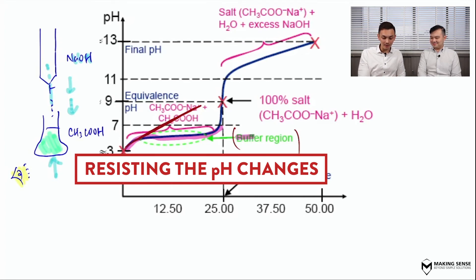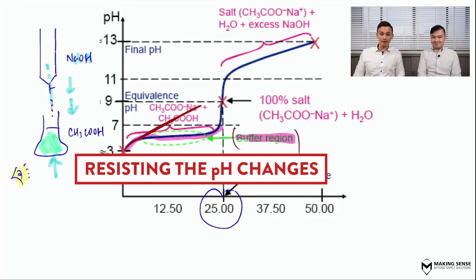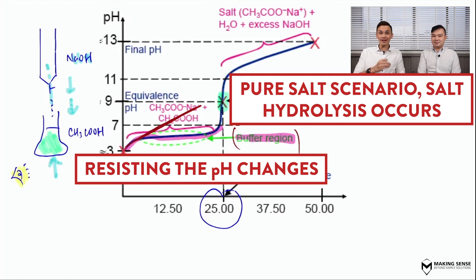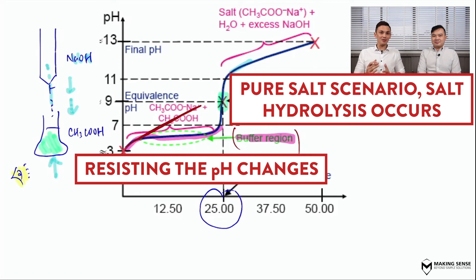Every time there is a plateau or a non-linear increase, there must be an indication that a buffer is present. The buffer comes before the end point. At the equivalence point — in this case at 25.00 cm³ — you see an exponential increase in pH, because you are changing from a buffer towards an only-salt situation. Then just adding one more drop changes it again to a basic solution — that vertical region corresponds to an exponential increase in pH and a change in situations. After that, the pH increases in a linear fashion because there is no buffer formed.